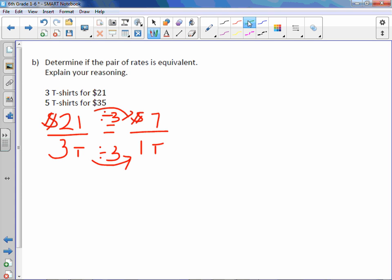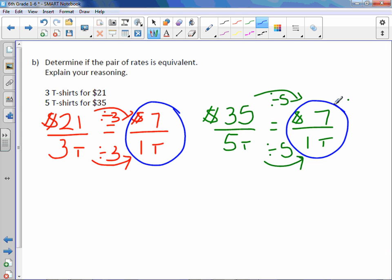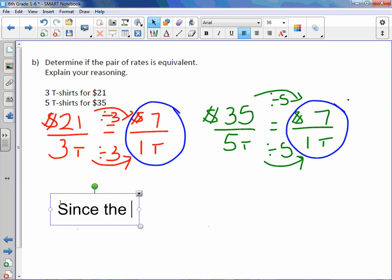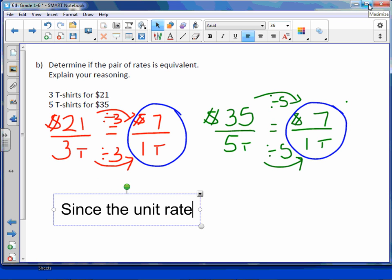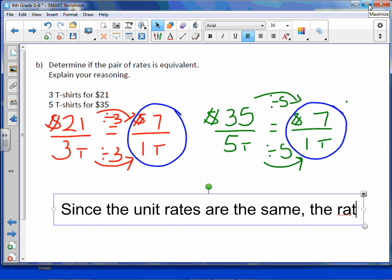Now the next one, we have 5 t-shirts for $35. Again, unless otherwise stated, money always goes on top. $35 for 5 t-shirts. We'll make it a unit rate by making it 1 t-shirt. To get from 5 to 1, we divide by 5 and do the same in the numerator. 35 divided by 5 is 7. Now in this case, we do have the same unit rate, therefore they are equivalent. So, since the unit rates are the same, the rates are equivalent.